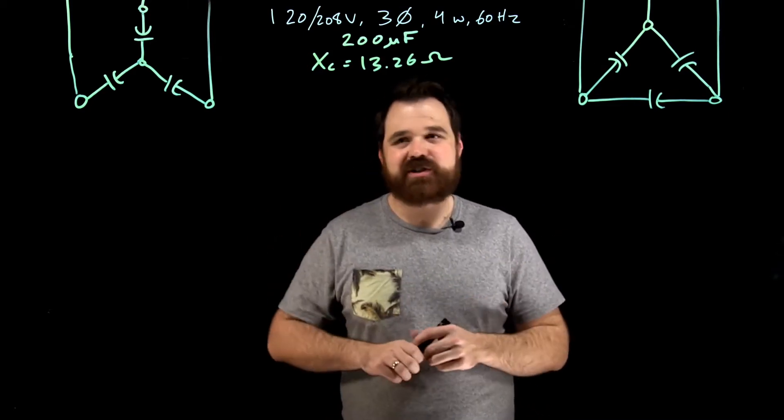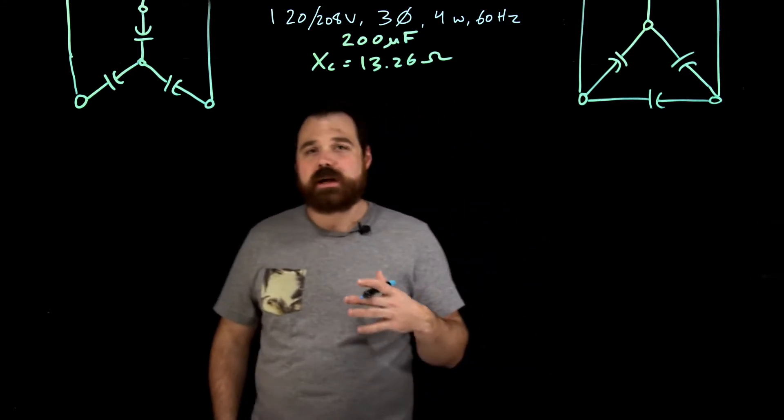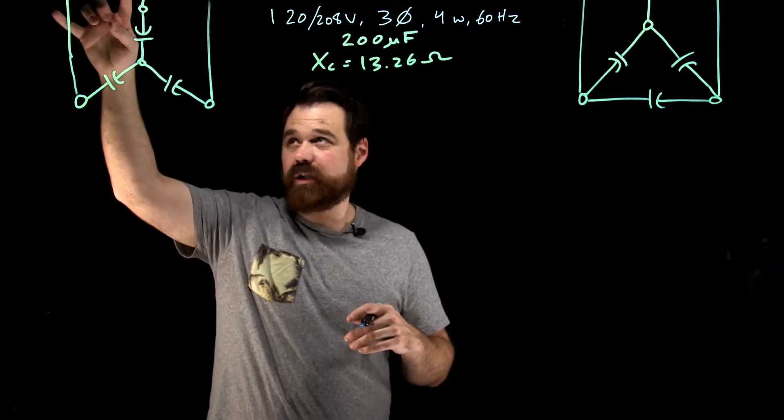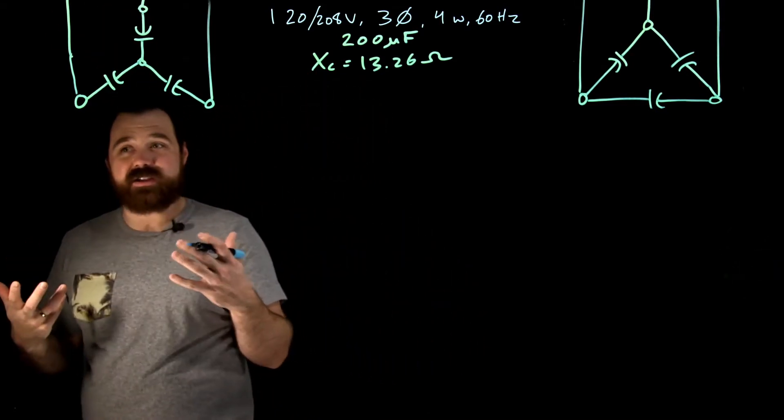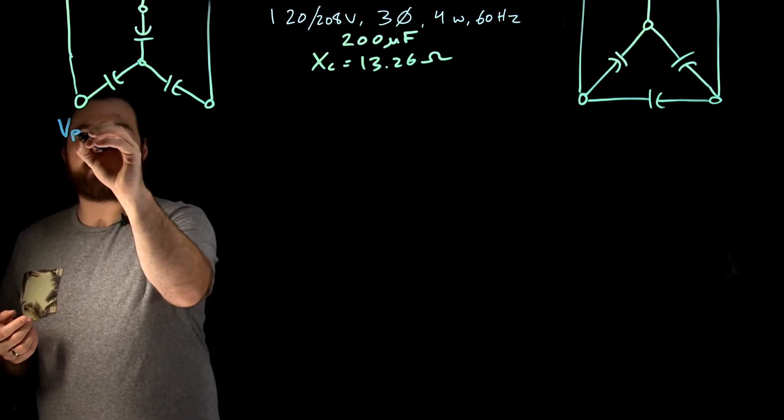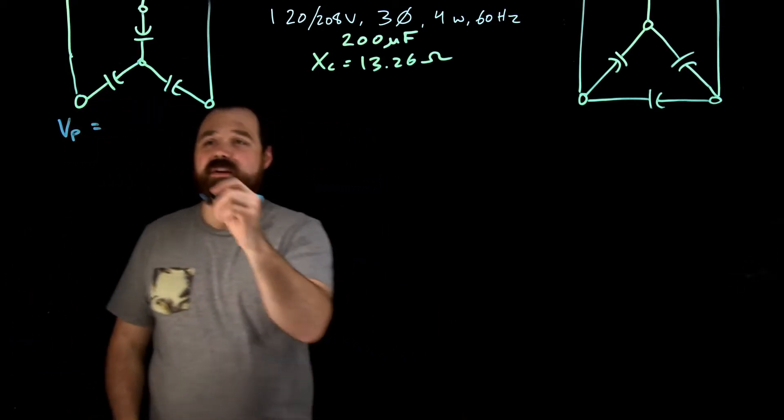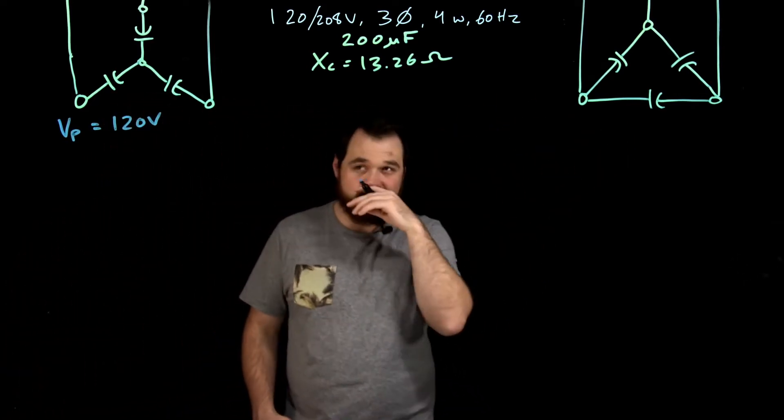So let's do a little bit of calculations. So coming over here, looking at the Y circuit first, we have to remember each of these capacitors is located within the phase. It's located within a single phase of that circuit. So in order to do any calculations, we need to know what our phase voltage is. In this case, we're 120, 208, which means our phase voltage is 120 volts. 208 being the root three larger.